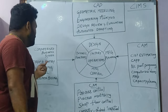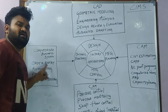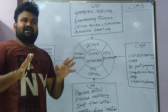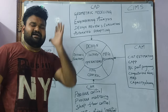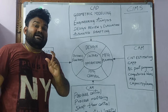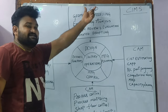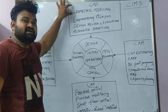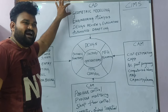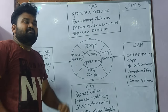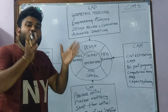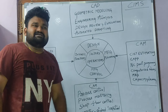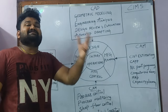We enter the component into the computer. The component is first designed — the first design step is geometric modeling. Geometric modeling is CAD. We have to design that component. Engineering analysis: if we are ready to design this component, we should do an analysis.